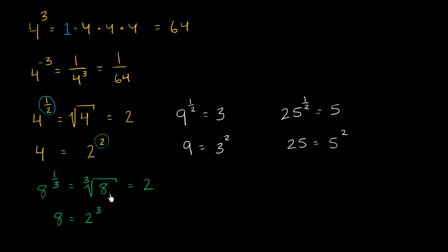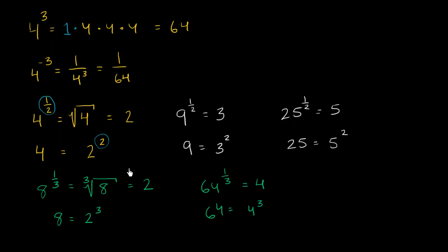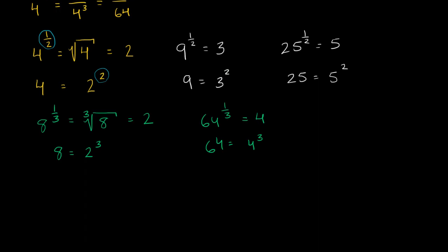Let's do a few more examples. What is 64 to the 1/3 power? Well, we already know that 4 times 4 times 4 is 64, so this is going to be 4. We already established that 64 is the same thing as 4 to the third. I think you're starting to see a little bit of a pattern and symmetry here. And we can extend this idea to arbitrary rational exponents.